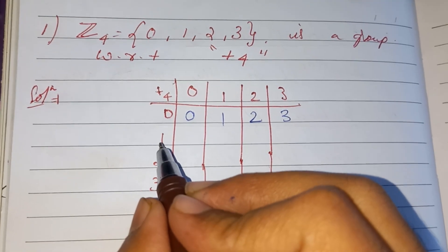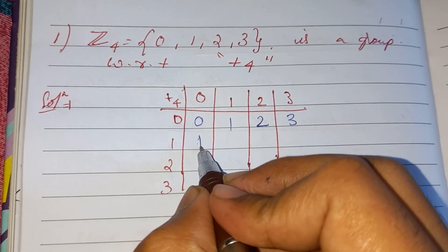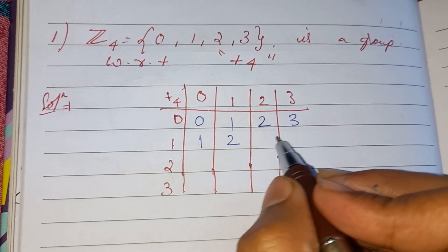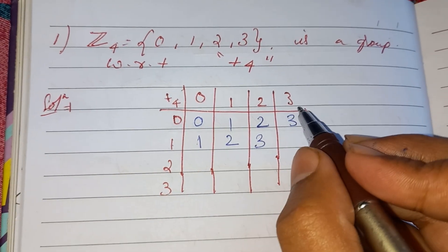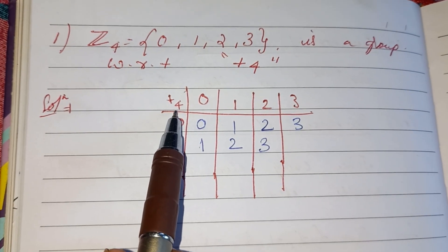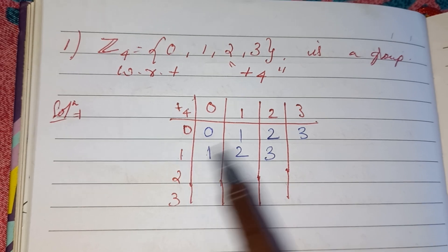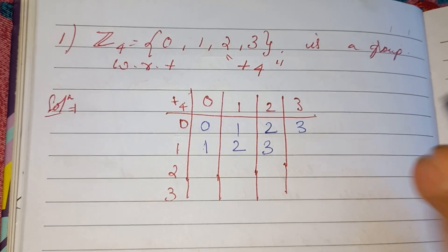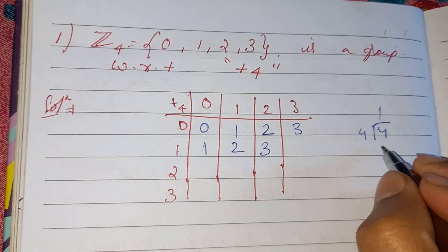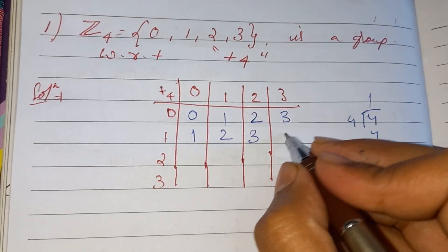Similarly, 1 plus 0 is 1, 1 plus 1 is 2, 1 plus 2 is 3. For 1 plus 3 equals 4 — since it is addition modulo 4, we divide by 4, and the remainder is 0.